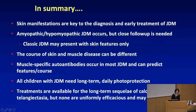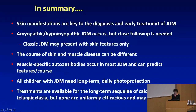In summary: it's important to recognize skin manifestations because they are key to diagnosis and early treatment. Amyopathic and hypomyopathic forms can occur, but close follow-up is needed. Classic JDM may present with skin features only. The course of skin and muscle disease can be different, and we can't just be targeting the muscle disease. Muscle-specific autoantibodies occur in most patients and may predict features and course. All children need long-term daily photo protection. Some treatments are available for long-term sequelae, but none are uniformly efficacious. We desperately need better understanding of what's going on in the skin of JDM and how to treat with a better targeted approach.